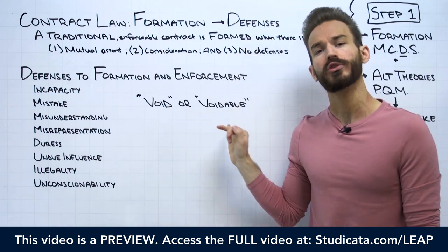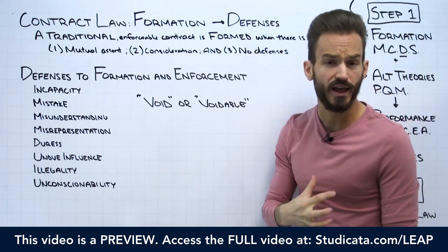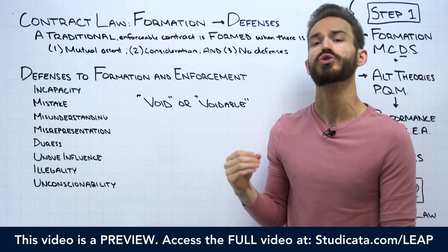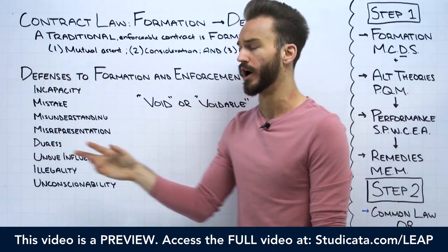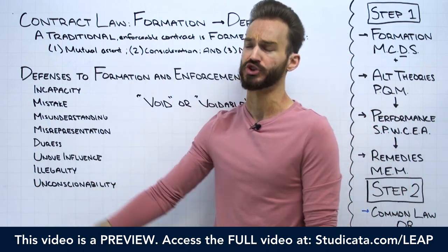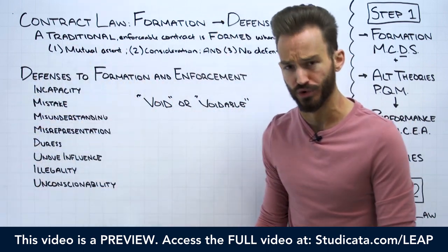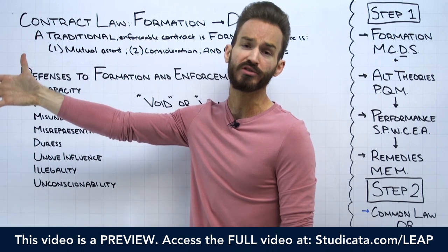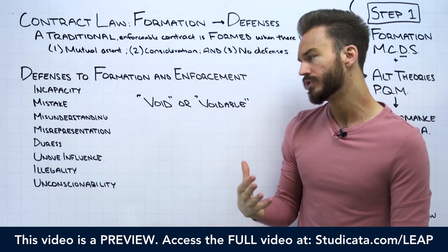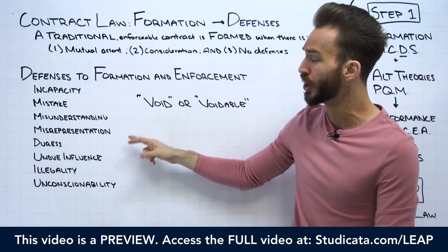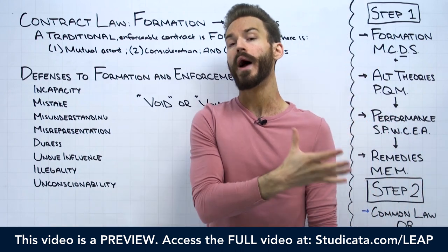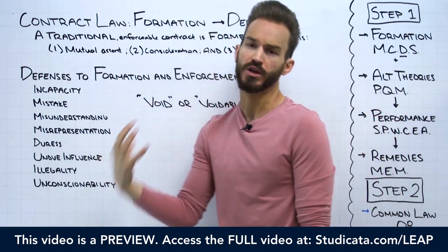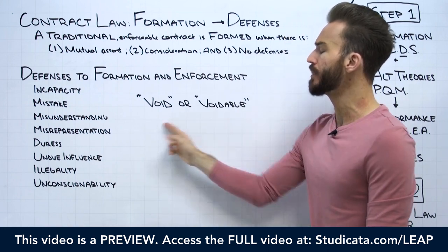A voidable contract is a little bit different. A voidable contract is an enforceable contract until a party takes steps to get out of or avoid the contract — it's voidable at that party's discretion. The interesting thing is that a lot of times only one party is going to be bound to the terms of the contract. The other party — usually the innocent party, the party asserting the defense — will be free to walk away from the contract at any time. But until that happens, we have an enforceable contract.